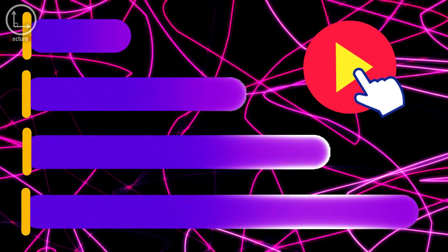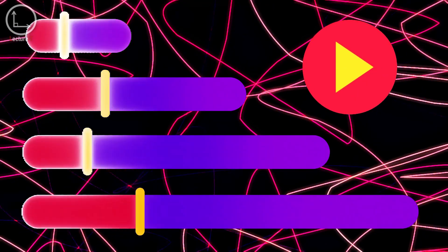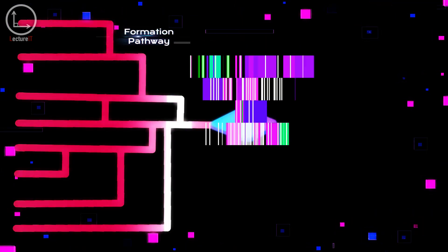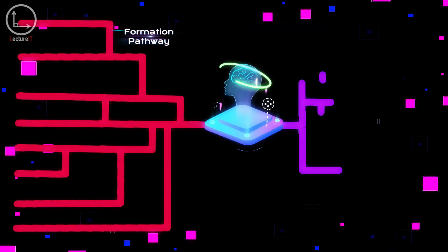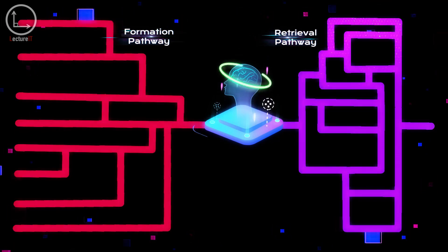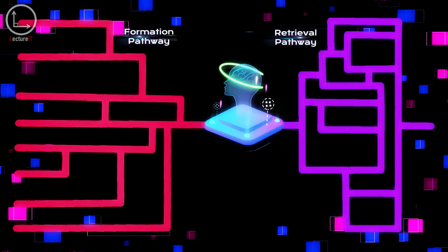Retrieving a memory isn't as simple as replaying a recording. While it's often thought that the same neuronal circuits are used for both formation and recall, research shows that the brain takes a different path when retrieving a memory. This detour helps access stored information more effectively.